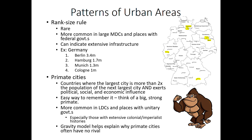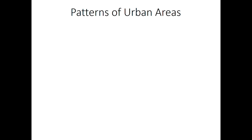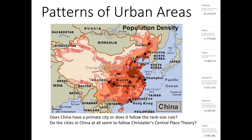These patterns of urban areas can apply in various places but they don't always apply. Looking at a choropleth map of China showing population densities and major cities — Beijing the capital, Tianjin, Shanghai and so on — does China have a primate city or does it follow the rank size rule? Not every country follows one or the other, and certainly can't be both.